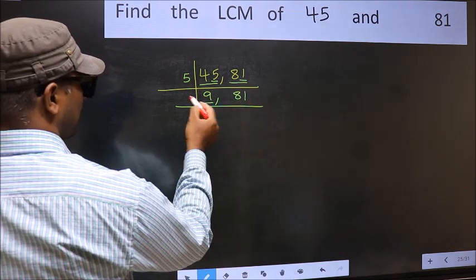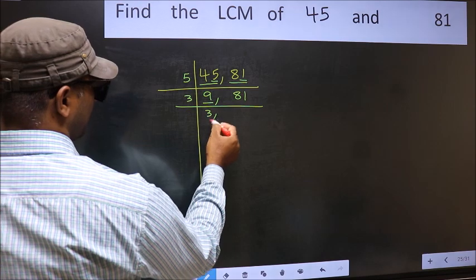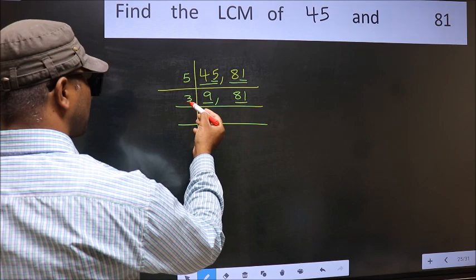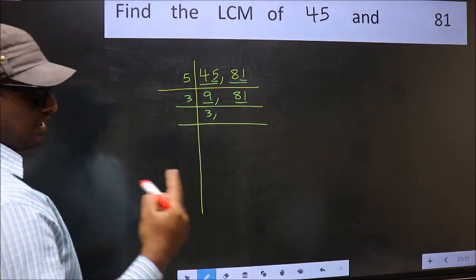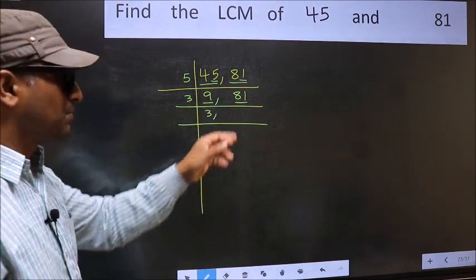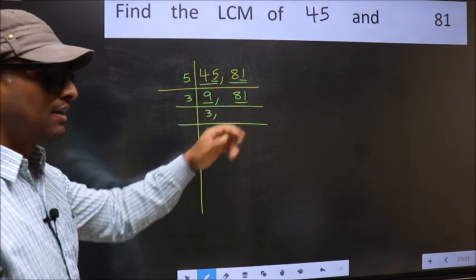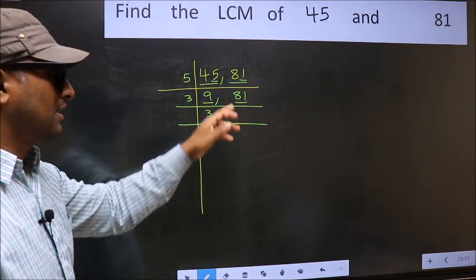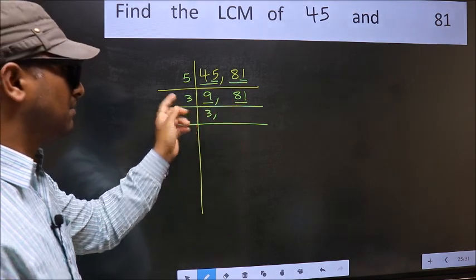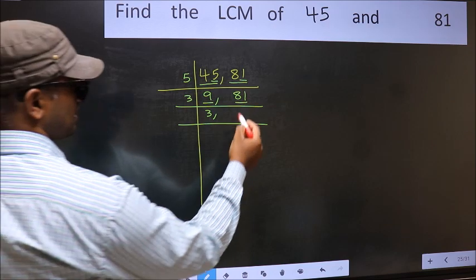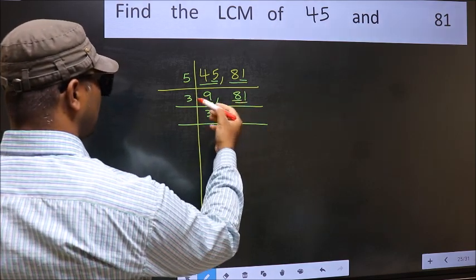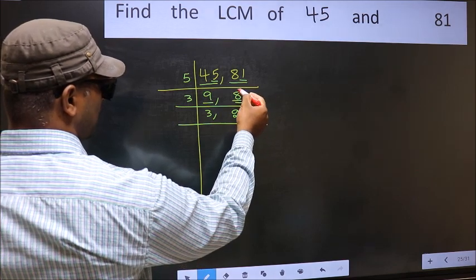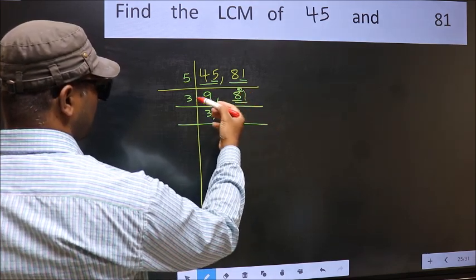Now we have 9. Since 9 is 3×3, we check divisibility by 3. For 81, add the digits: 8 plus 1 equals 9, and 9 is divisible by 3, so 81 is also divisible by 3. For 9 divided by 3: the closest multiple of 3 to 9 is 6 (3×2=6), giving remainder 3, carry 2 — we get 3. For 81 divided by 3: 3×7=21, so we get 27.